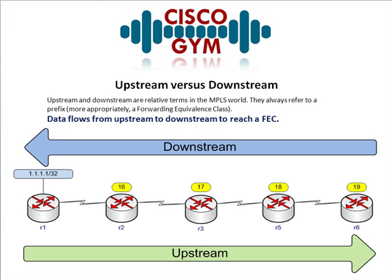Before we go, I want to hit one more topic: the concept of upstream versus downstream when referring to MPLS. Upstream and downstream are relative terms in the MPLS world — they always refer to a prefix, or more appropriately, a FEC (forwarding equivalence class). The key point in bold: data flows from upstream to downstream to reach a FEC. This appears in Cisco's documentation and could show up on the exam. It's not a hard concept, but the fact that it's relative is what throws people off.